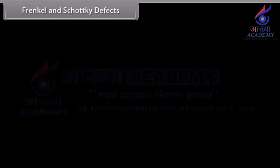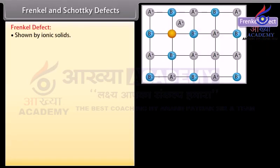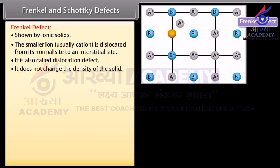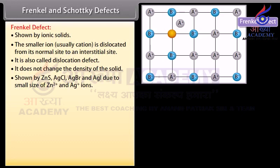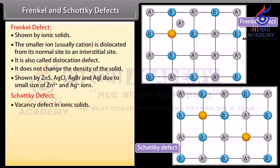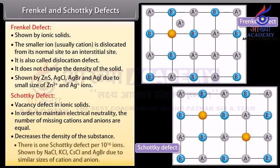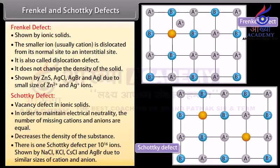Frenkel defect is shown by ionic solids where the smaller ion, usually a cation, is dislocated from its normal site to an interstitial site. It is also called dislocation defect and does not change the density. It is shown by ZnS, AgCl, AgBr, and AgI due to the small size of Zn²⁺ and Ag⁺ ions. Schottky defect is a vacancy defect in ionic solids; to maintain electrical neutrality, equal numbers of cations and anions are missing, decreasing density. There is one Schottky defect per 10¹⁶ ions, shown by NaCl, KCl, CsCl, and AgBr, due to similar sizes of cation and anion.